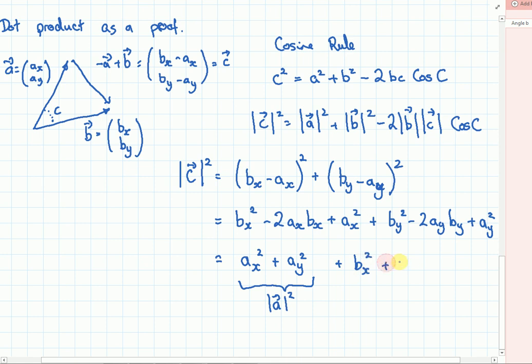And we'd have the BY and the B parts. BX squared plus BY squared. And that gives me the modulus of B all squared. And we also have a minus 2AXBX and minus 2AYBY.